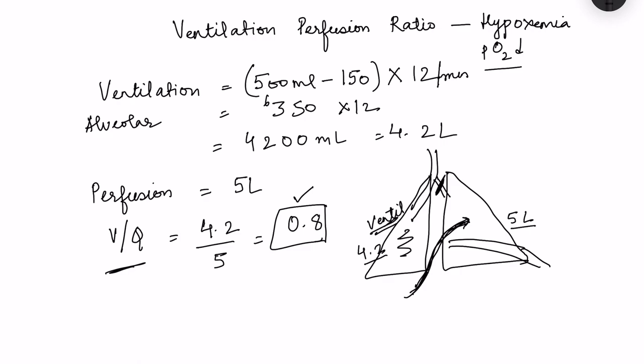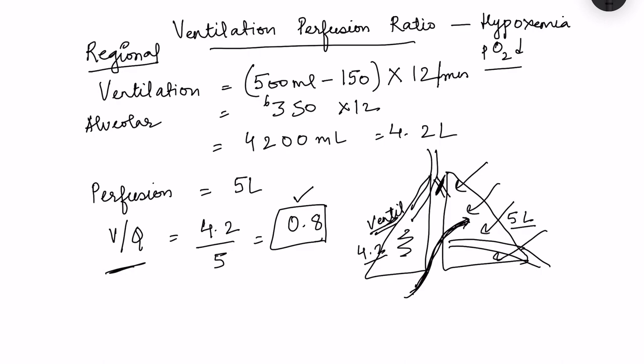When we talk about ventilation-perfusion ratio, we are interested in the regional VQ ratio — what matching is happening in various parts of the lung. Is it the same everywhere or does it vary? In some disease conditions and even physiological conditions, there is variation in ventilation and perfusion from apex to base of the lung.